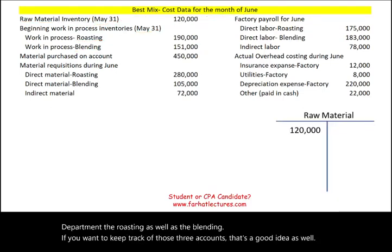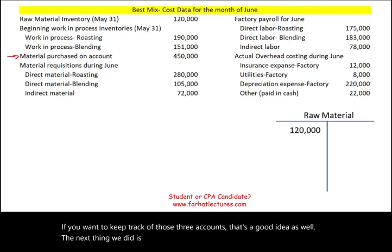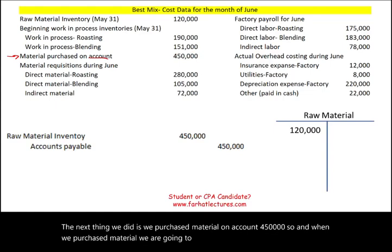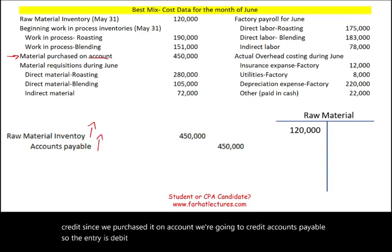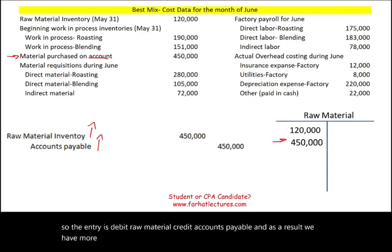We purchased material on account for $450,000. When we purchase material, we debit raw material and credit accounts payable since it was purchased on account. As a result, we have an additional $450,000 in raw material inventory.